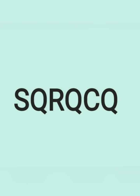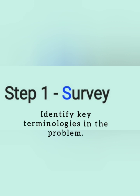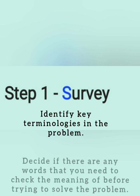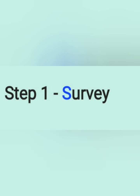Before we apply it let me just go through the steps. Step one, survey. That's the first S in SQRQCQ. Just as in our previous lessons what we did with survey we're doing the same with this math problem. You're just identifying the key terminologies that are in the problem. Jot them down. Decide if there are any words that you need to check the meaning of before trying to solve the problem.